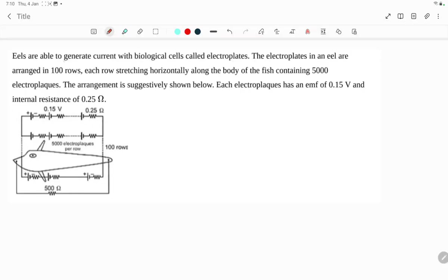This question states that eels are able to generate current with biological cells called electroplates. These electroplates are arranged in 100 rows, so we can say that m is equal to 100.